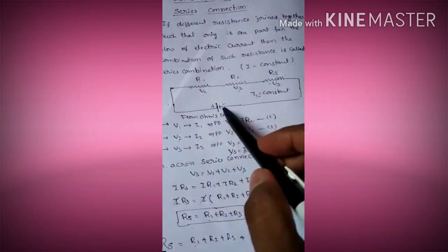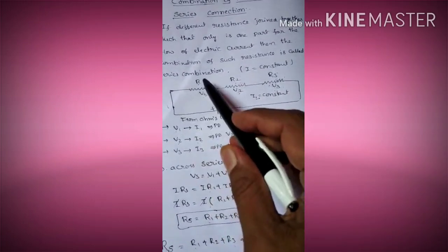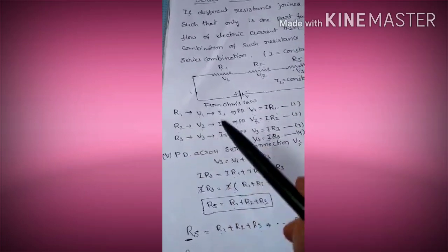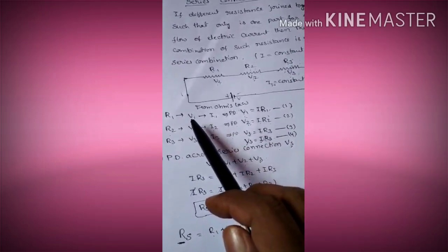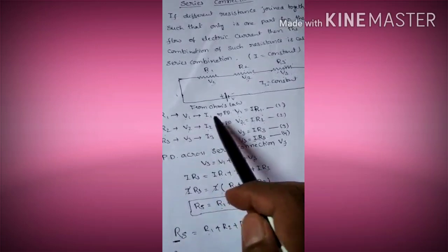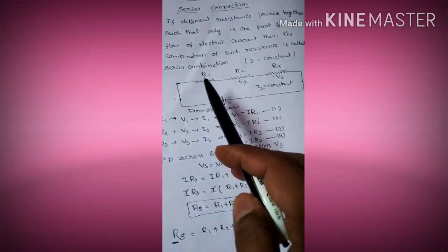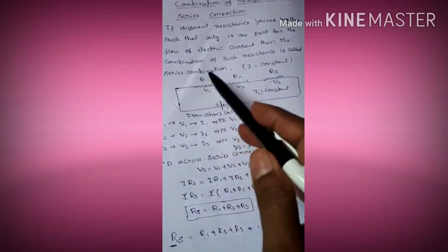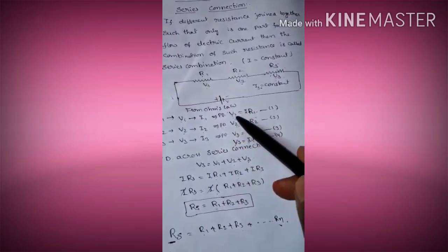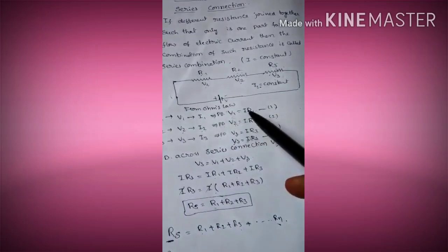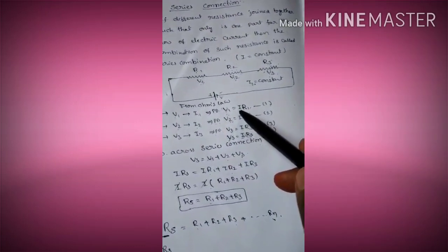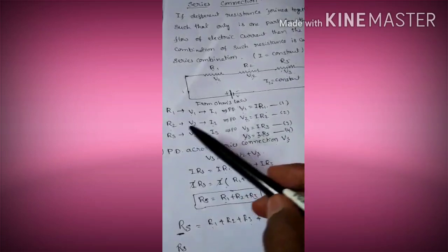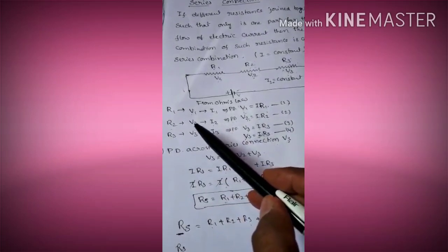When you add the resistances, the voltage V is divided. For resistance R1, the voltage is V1 and the current is I1. From Ohm's Law, the potential difference across R1 is V1 = I × R1. That is equation 1. For resistance R2, the voltage is V2 and the current is I2, and the potential difference V2 = I × R2. That is equation 2.